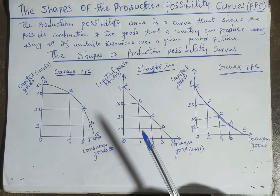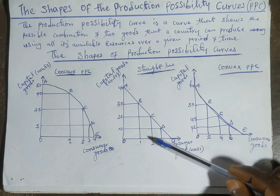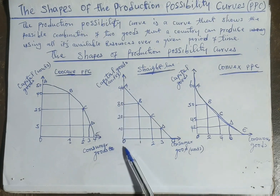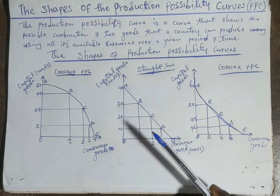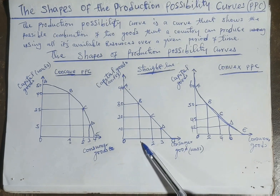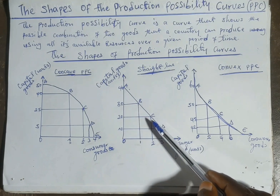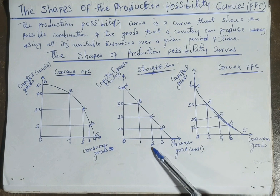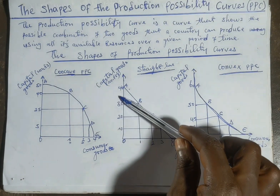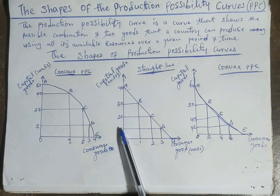A straight line PPC is a PPC that shows a constant opportunity cost between two goods. If a country is currently producing at combination A with no units of consumer goods and wants to produce consumer goods, it can produce one unit of consumer goods at combination B with 30 units of capital goods. Moving to combination C, it produces two units of consumer goods. There is a constant opportunity cost — to produce each additional unit of consumer goods, the country gives up equal units of capital goods.